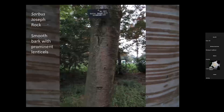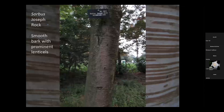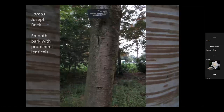Here's a Sorbus — the variety Joseph Rock, a very common garden tree — with smooth bark. But you can see little nobbles on the bark, which are the lenticels: the way the tree breathes through the bark. In the Sorbus, you've got very prominent lenticels within that smooth bark.